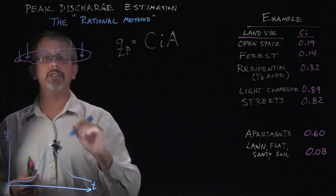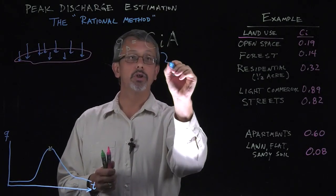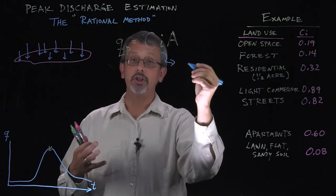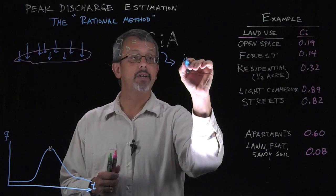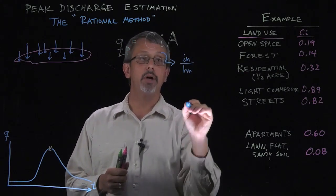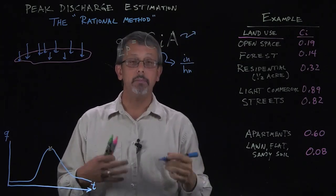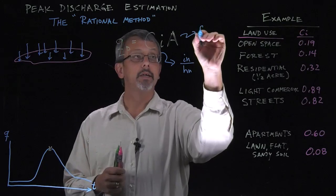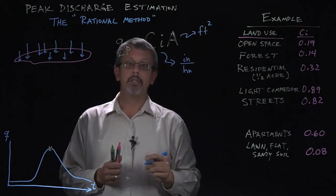The intensity we're talking about is a measurement we've seen before, which is usually a measurement of inches per hour. It's some measurement of depth of rainfall in some units of time, inches per hour. And our area is going to be in some sort of area, maybe acres, maybe square feet or something along those lines.